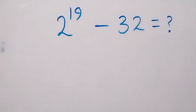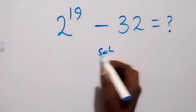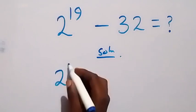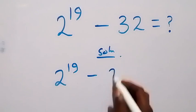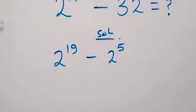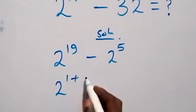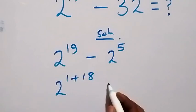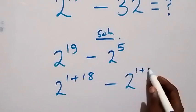Hello, you are welcome. How to solve this nice math problem. From what we are given, we can write this as 2 raised to power 19 minus 32, where 32 can be written as 2 raised to power 5. From here we can write 19 as 1 plus 18, giving 2 raised to power 1 plus 18, and also write 5 as 1 plus 4.